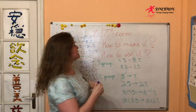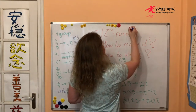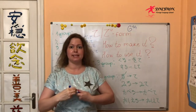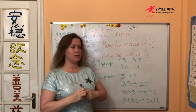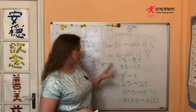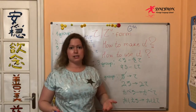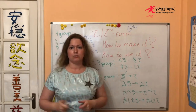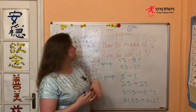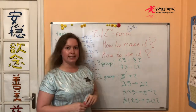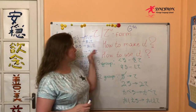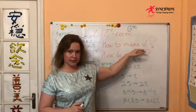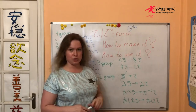And actually there is a form — it's a sixth base, a sixth form of Japanese verbs — because it has all the same characteristics as a base of Japanese verbs. But officially it is called the te-form.